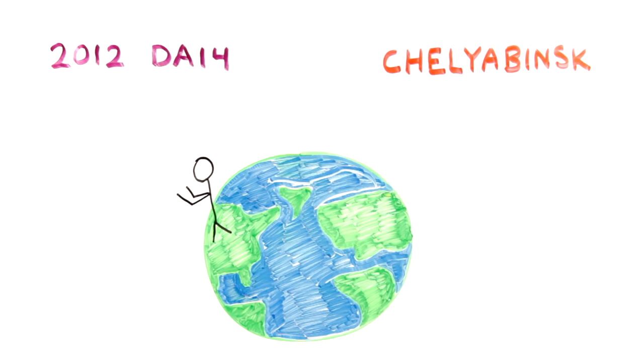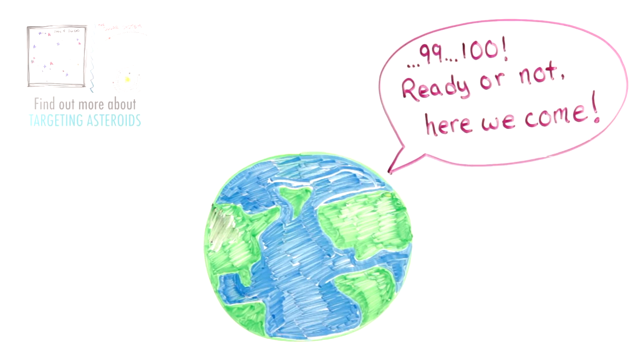How can scientists tell if a near-Earth object is going to be a very near-Earth object, or if it's just going to fly by? First, they have to find the asteroids.